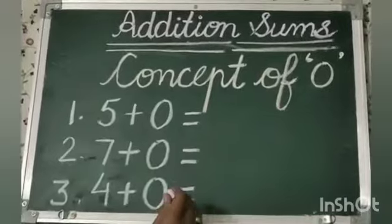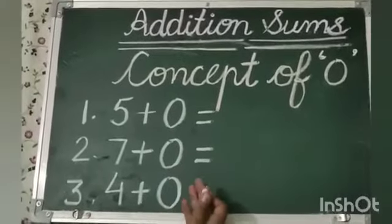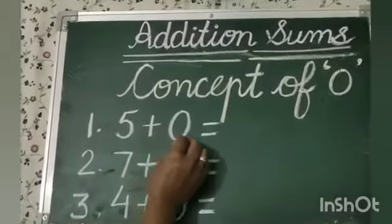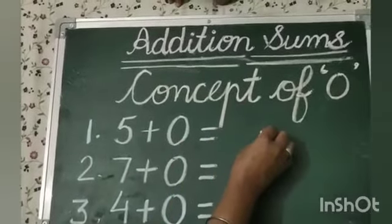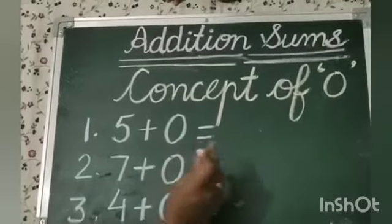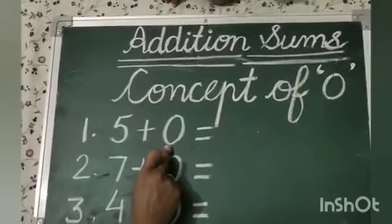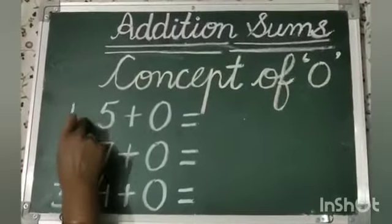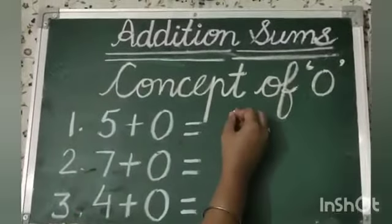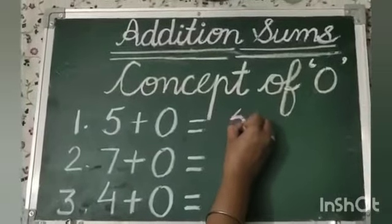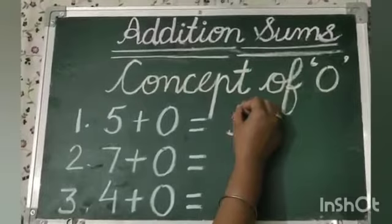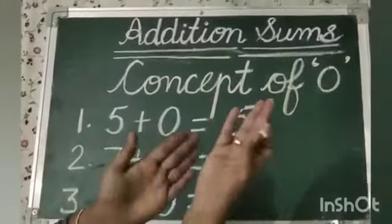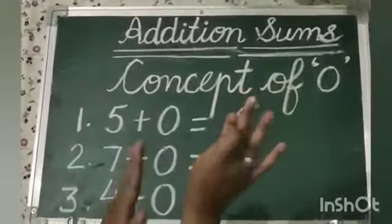Got it? Now let's do some practice. First: five plus zero is equal to what? When we add zero in any number, the same number will be the answer. So five plus zero is equal to five. Zero means no number.